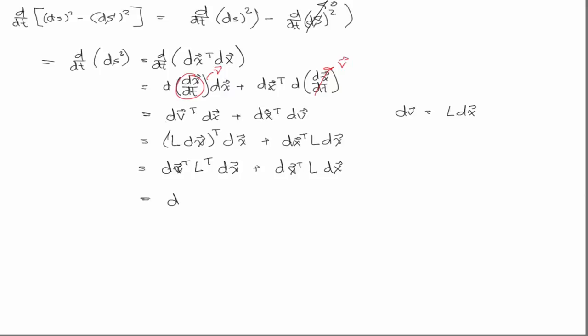And so, then when you take the transpose of two tensors multiplying one another, it's the transpose of each of them in reverse. So, we have dx transpose L transpose dx plus dx transpose L dx. And so, now, we'll factor out our dx's. So, we have L transpose plus L dx. Now, we're going to introduce another definition. This is two times D, where D is the rate of deformation. So, D is one half L transpose plus L. So, this is the rate of deformation tensor.